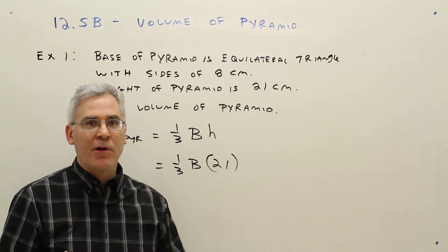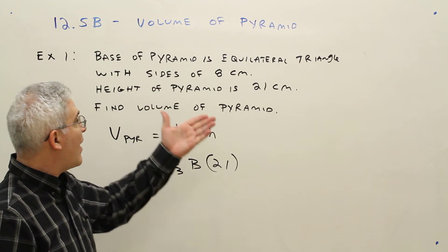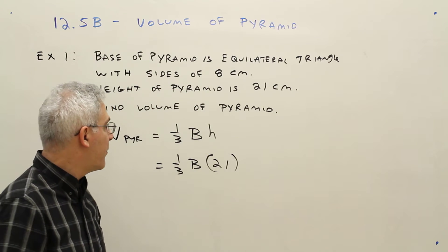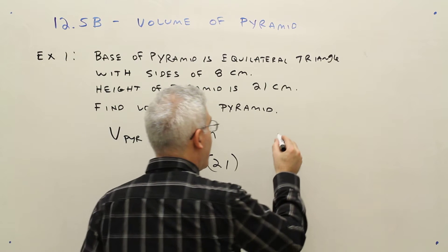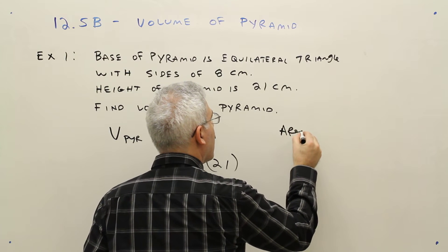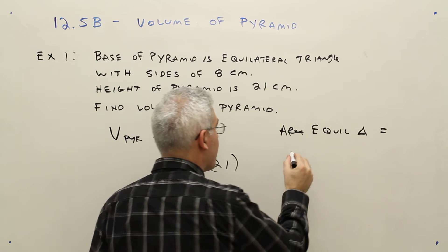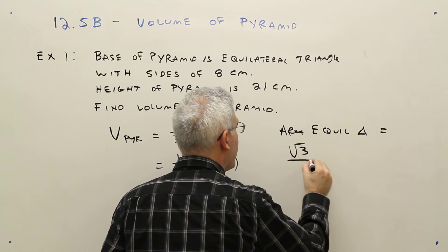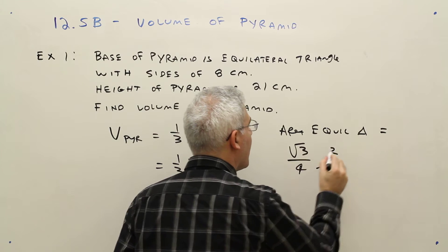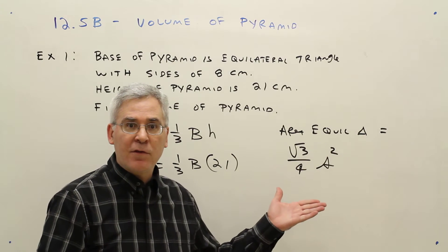So once we find the base area, we're done. The base happens to be an equilateral triangle. So recall that the area of an equilateral triangle equals the square root of 3 over 4 s squared, where s is the side length.